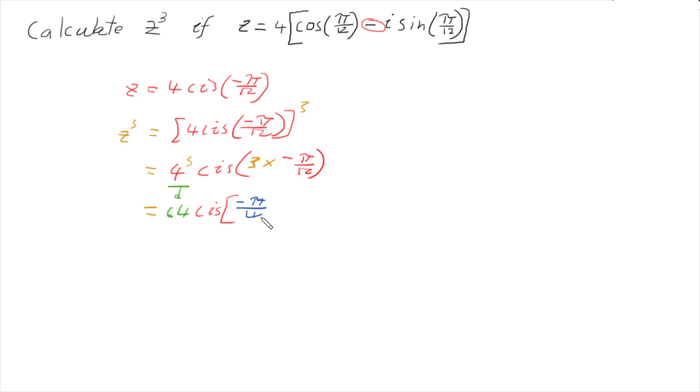because 3 over 12 is one quarter. So that would be our answer, z cubed is 64 cis negative pi over 4.